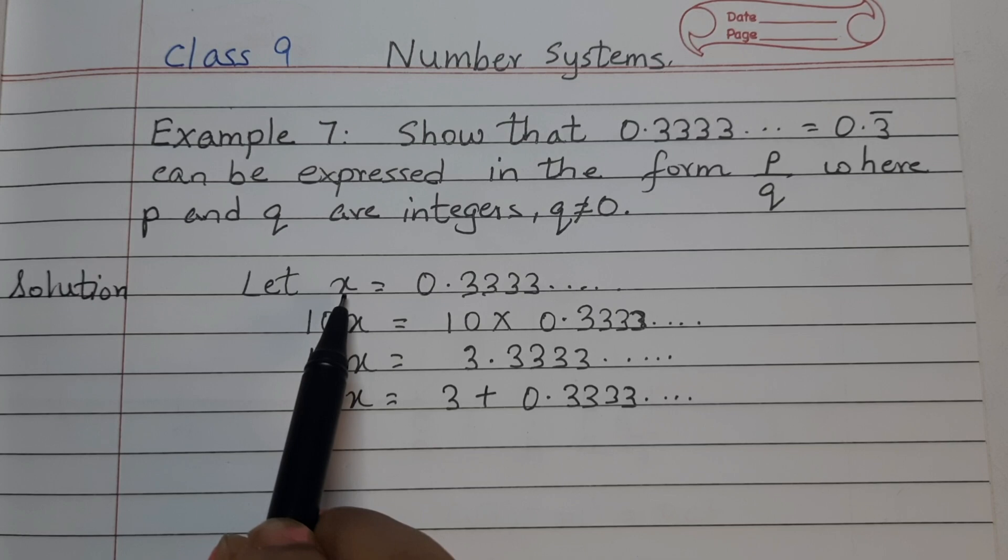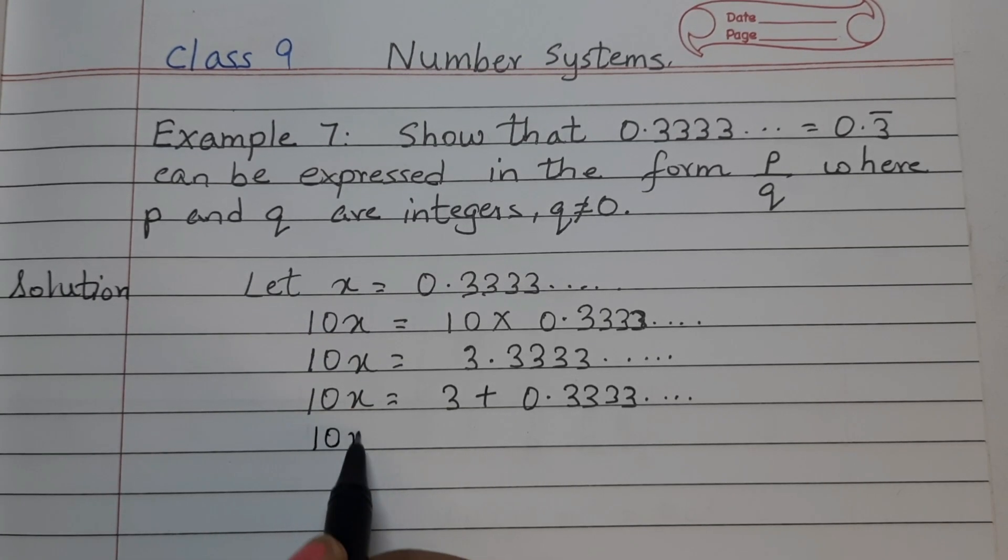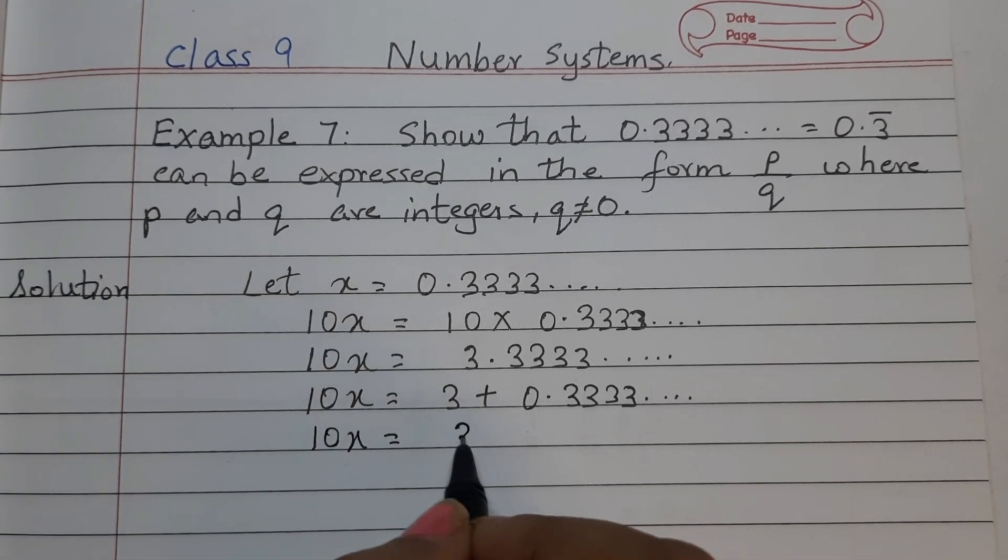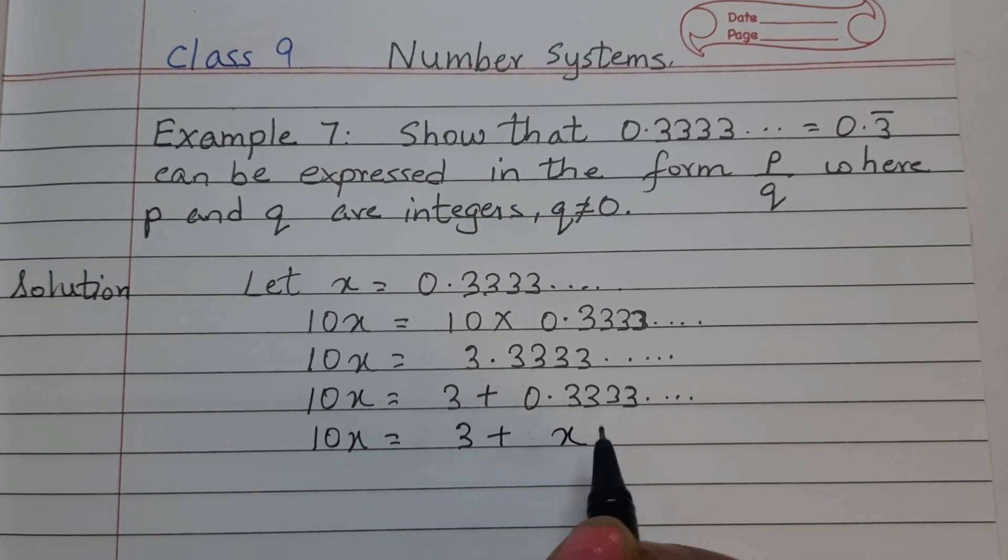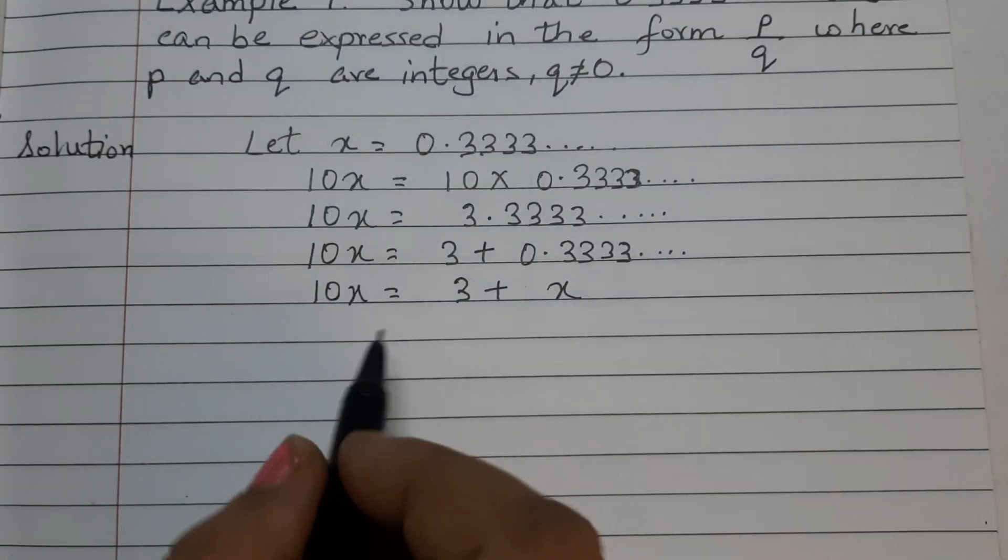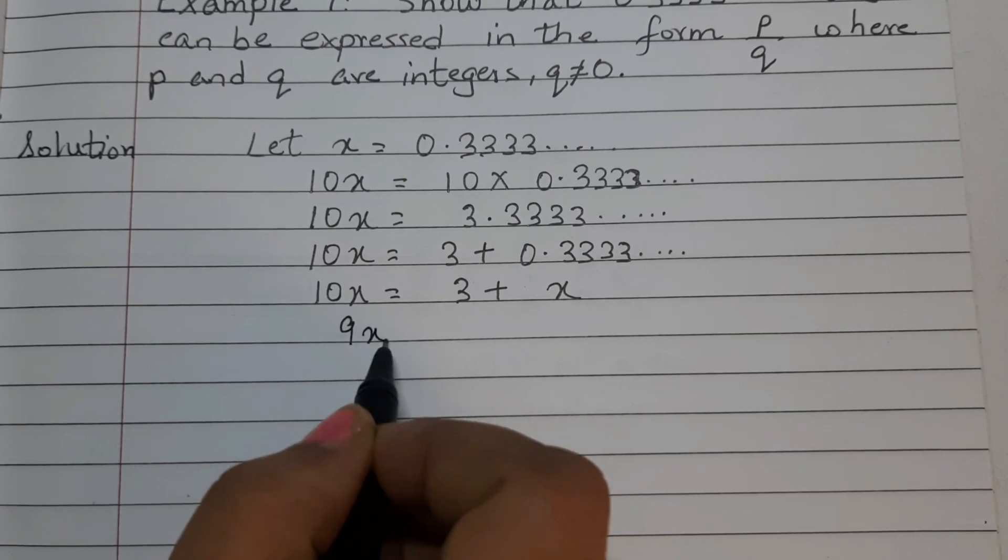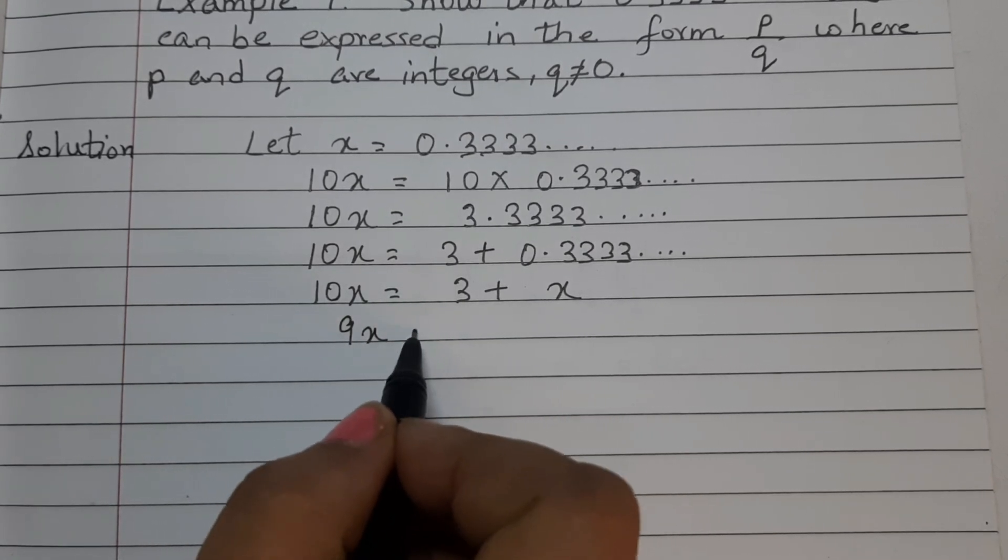So we can rewrite this as 10x equals to 3 plus x. Take x to the other side, so this will become 9x. 10x minus x is 9x equals to 3.